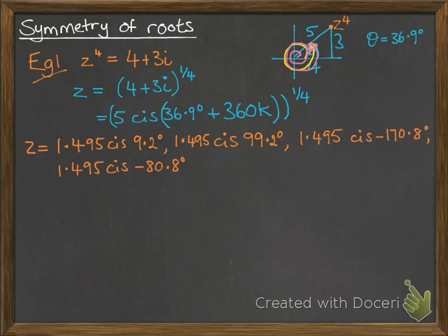So if we go back to what those roots were and have a think about what they look like on the Argand diagram, you'll notice something interesting happening. So our first solution ends up there in the first quadrant. The second solution's got a 99.2 degrees. They've all got the same modulus. They're all 1.495. The third one goes to an angle of minus 170.8, and the fourth one at minus 80.8.